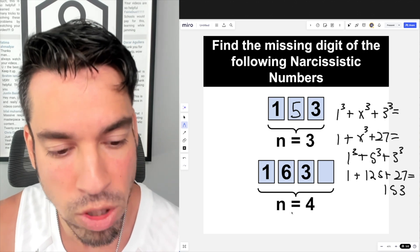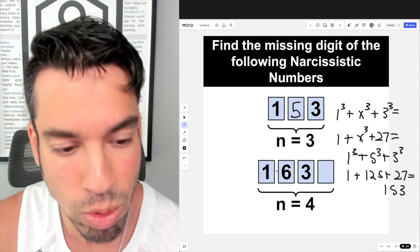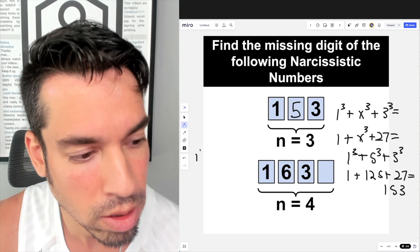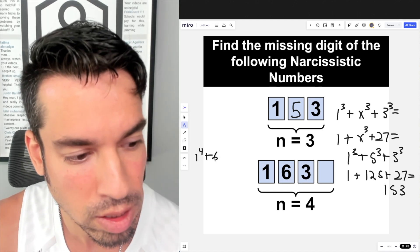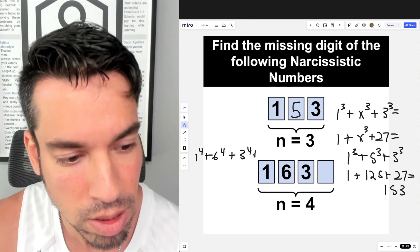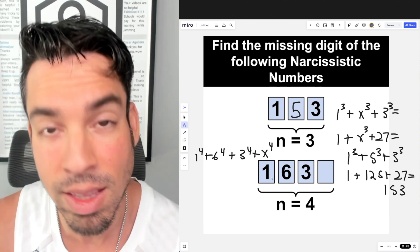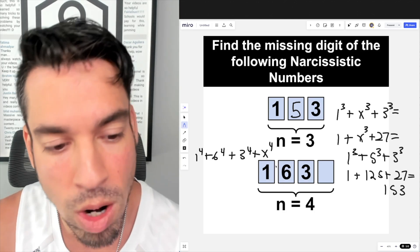Alright, what about for the bottom one? Now all of this is four digits, so n equals 4. So everything to the fourth power added together must equal the number itself. So 1⁴ is 1, 6⁴ we're going to calculate in a second, and 3⁴ plus some unknown to the fourth power has to equal this number itself. Again, it's in the thousands but in the one thousands, so we have to bear that in mind.